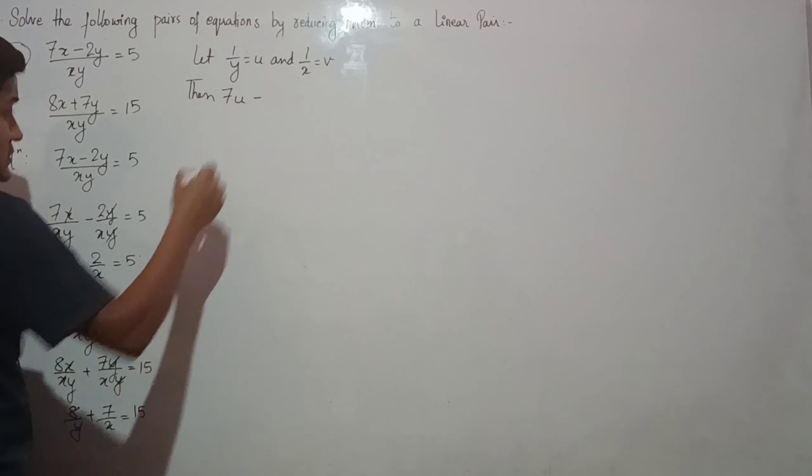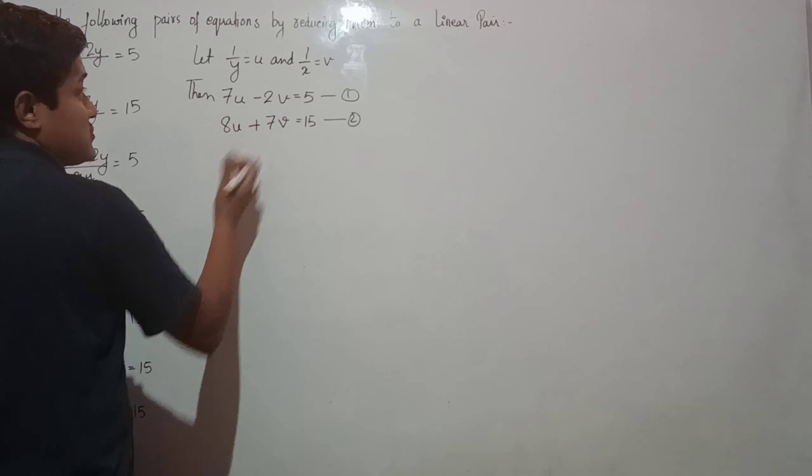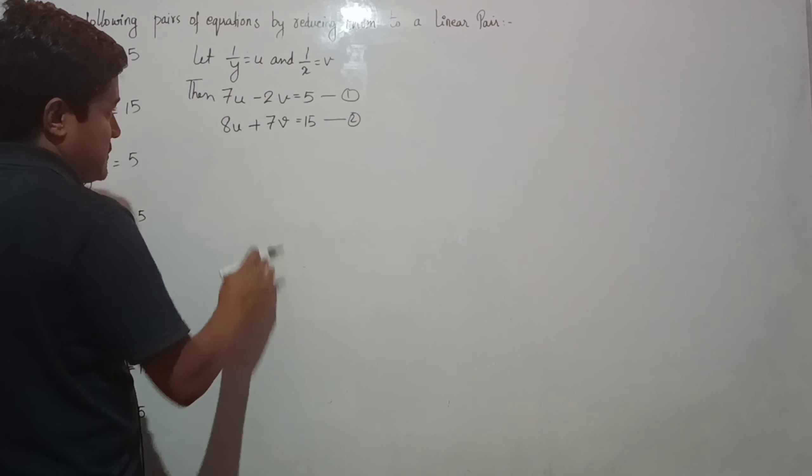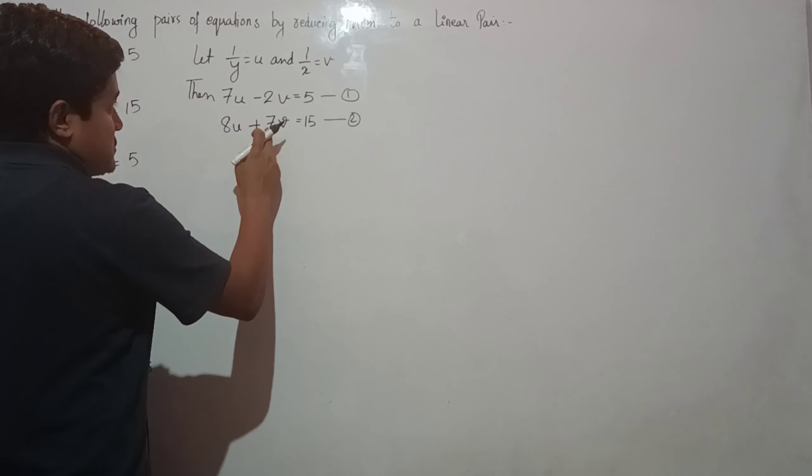We'll solve by elimination. To eliminate v, multiply equation 1 by 7 and equation 2 by 2, then add them.